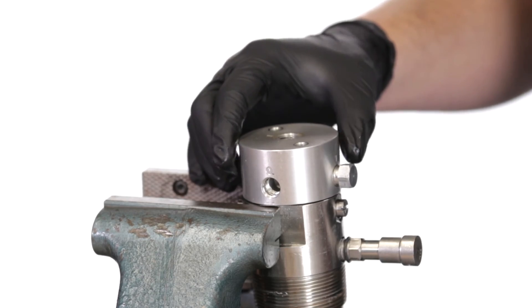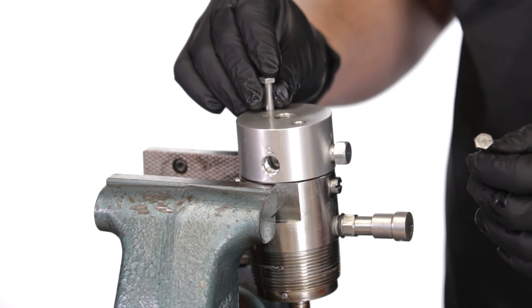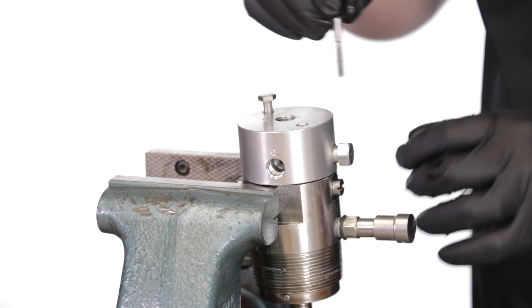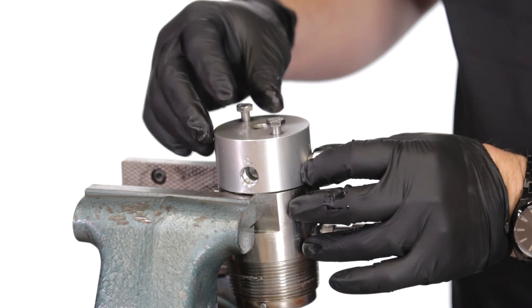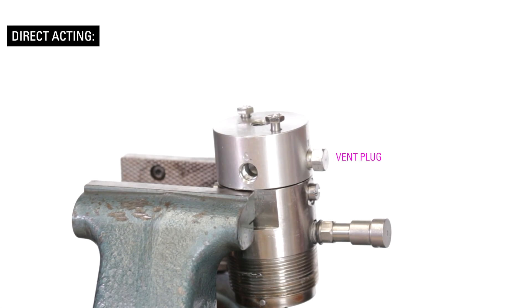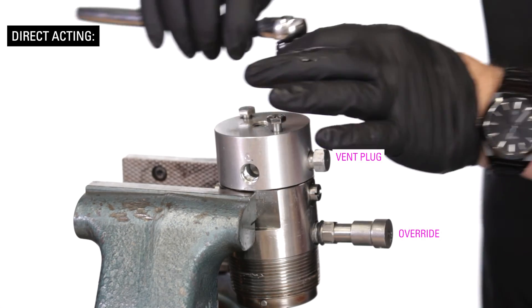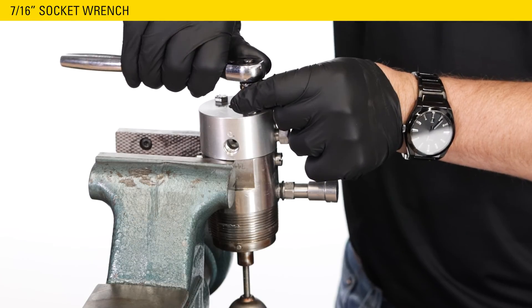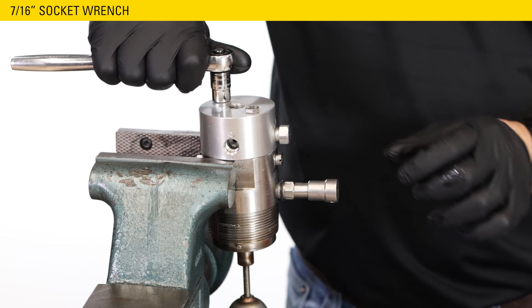Next, reattach the pilot housing to the body. This is where you will decide if you want direct acting or indirect acting. For direct acting, which is what we will be doing, align the vent plug on the same side as the override. Tighten the two bolts evenly with the 7-16th wrench.